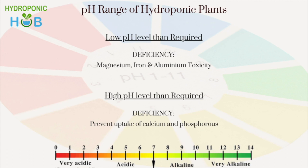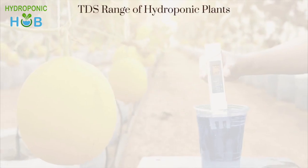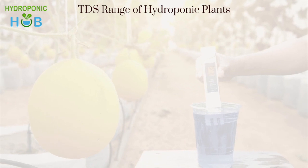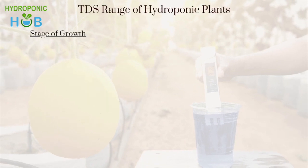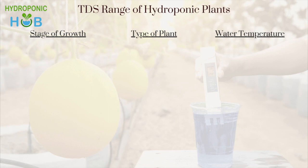When your plant is at a growth stage, you need to check the pH levels every day. The TDS level of hydroponic plants mainly depends on three factors: the stage of growth, the type of plant, and environmental changes. A constant check of the TDS level is required as all these factors change.